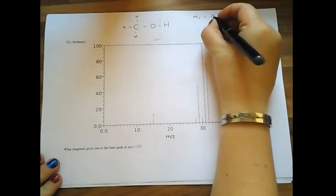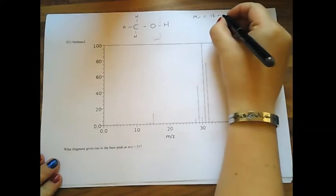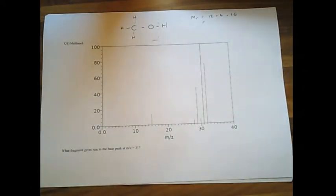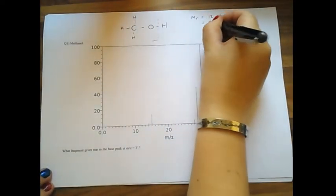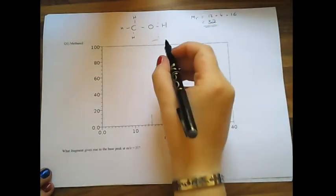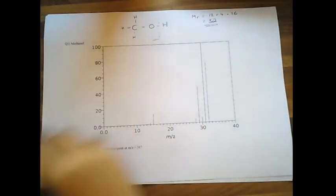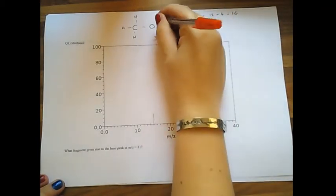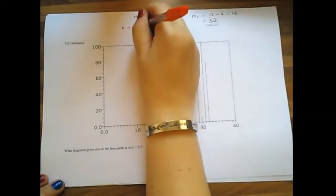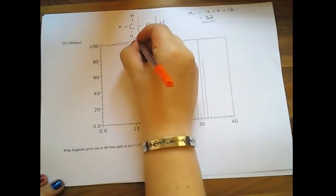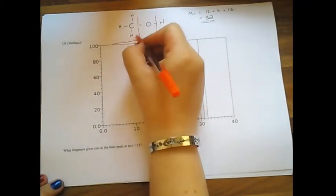So carbon is 12 plus 4 lots of hydrogen which is 4 plus 16 equals 32. So the molecular ion peak will be 32. If we have just this entire section here, that entire section is going to be 31. Anything over here is going to be just 15. So 12 plus 1, 2, 3.